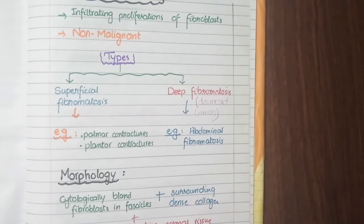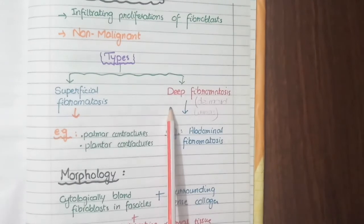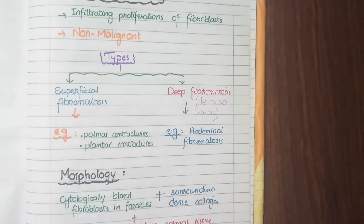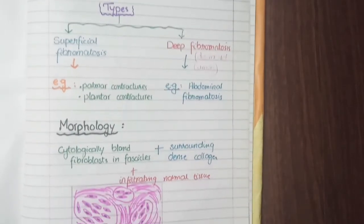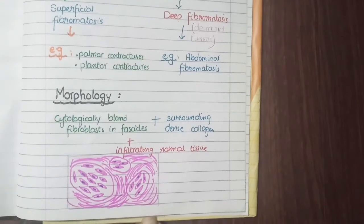The second type of fibromatosis is called deep fibromatosis or desmoid tumors. These develop in the deep tissues of the body, for example in the abdomen, where they are called abdominal fibromatosis. The two types of fibromatosis are superficial fibromatosis and deep fibromatosis.